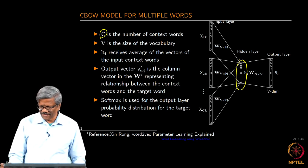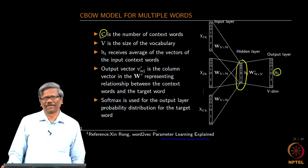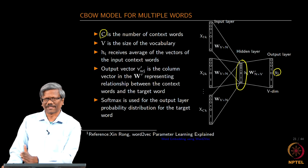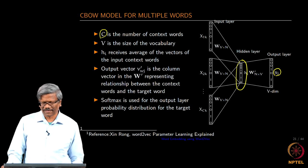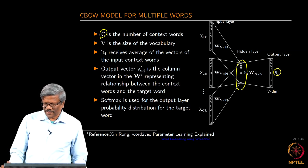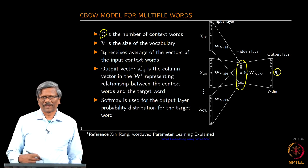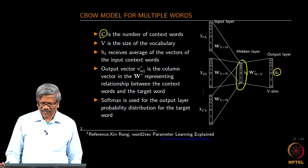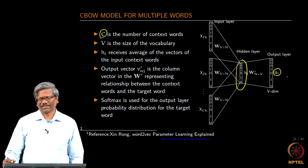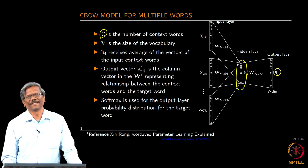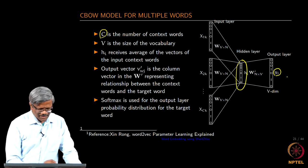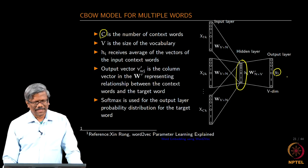And then there is an error that is computed. We will now have only one again word that we want to find out right based on the context we want to find the target right. We know what the target is because it is a learning process and then find the error do whatever we have to do to minimize the error. This is how it works in the multiple words as well.